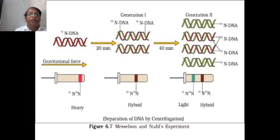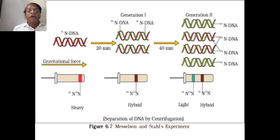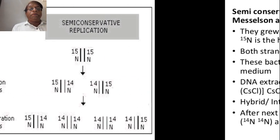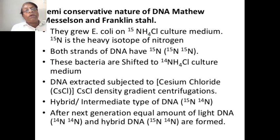Separation of DNA by centrifugation method — this is the Meselson and Stahl experiment, important for NEET examination. You can see the DNA molecule. The first generation DNA is hybrid DNA: one strand is old, the other strand is new. In the second generation, two DNAs are new and two are hybrid. Hybrid means having one old molecule and the other new molecule. This demonstrates the semi-conservative nature of DNA.